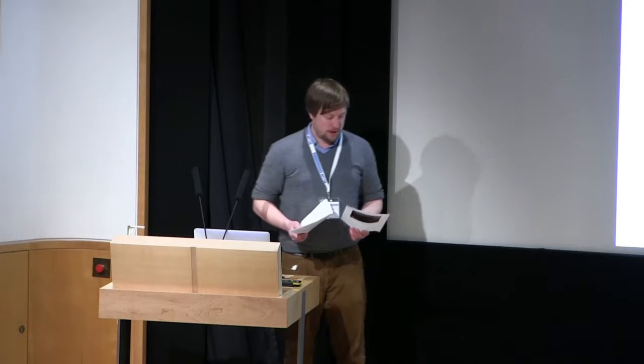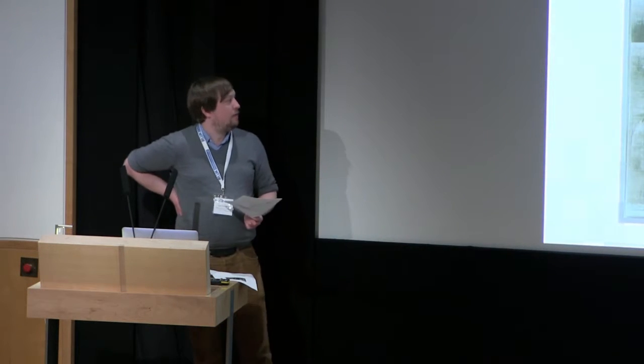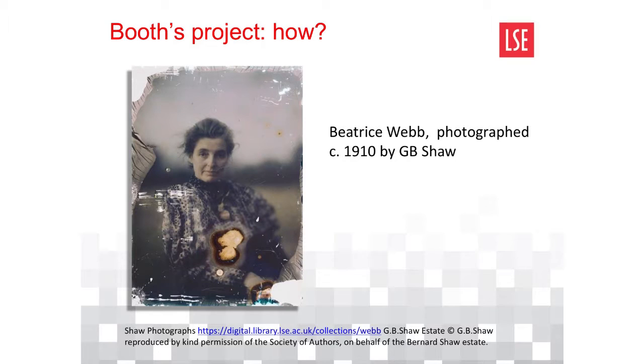So who was Charles Booth? Well, he was a Victorian businessman, philanthropist and social reformer. He lived between 1840 and 1916. And his project was to discover the level of poverty in Victorian London. Booth initially disbelieved that poverty was as prevalent as thinkers of the day proposed. But his project, which lasted over about 20 years, showed that it was actually much higher — some 30% of people in a city of 6 million lived below the poverty line, a concept that Booth himself conceived of.